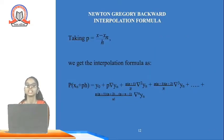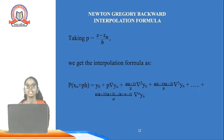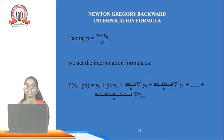Newton's Gregory backward interpolation formula: find p = (x − xₙ) / h. Then f(xₙ + ph) = yₙ + p·∇yₙ + [p(p+1)/2!]·∇²yₙ + [p(p+1)(p+2)/3!]·∇³yₙ, where nabla denotes the backward difference operator.